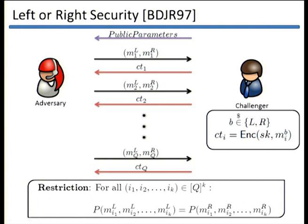Since in property-preserving encryption the adversary is allowed to learn the value of the property on any subset of plaintexts, we must impose a so-called equality pattern restriction. This says that if you pick any subset of K messages on the left sequence and apply the property P, it should give you the same result as applying the property on the same subset on the right sequence. If this restriction weren't true, the adversary could use the testing algorithm and break the scheme trivially.